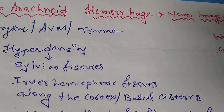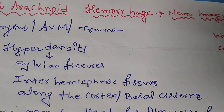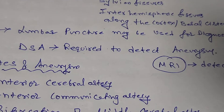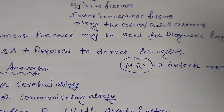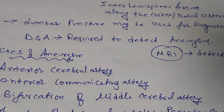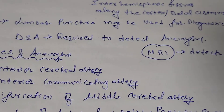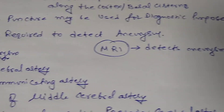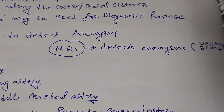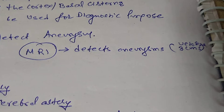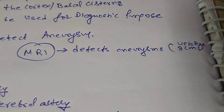Lumbar puncture may be used for diagnostic purposes. DSA (digital subtraction angiography) is required to detect aneurysms. MRI can detect aneurysms even up to the size of 3 millimeters.